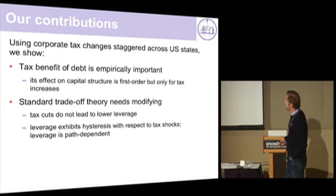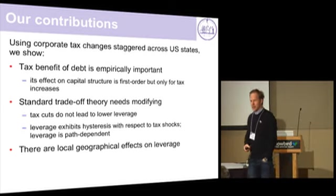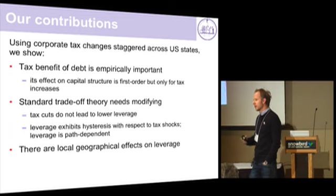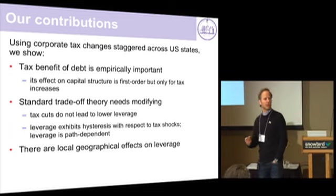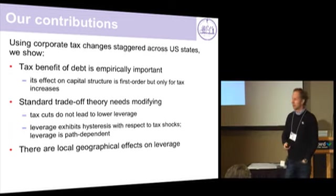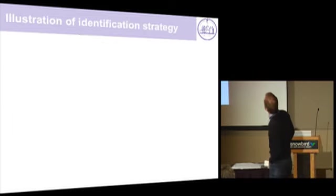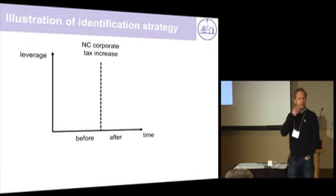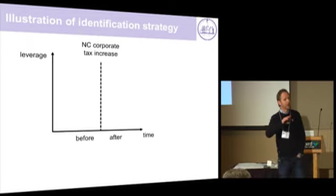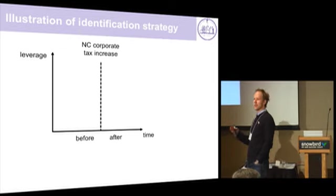So there's something inherently dynamic in how we should look at capital structure — there are histories that we've shown in our data. Let me illustrate a fixed idea of what the basic identification strategy and hence the basic identification assumption is that we exploit. It's essentially a simple diff-in-diff.